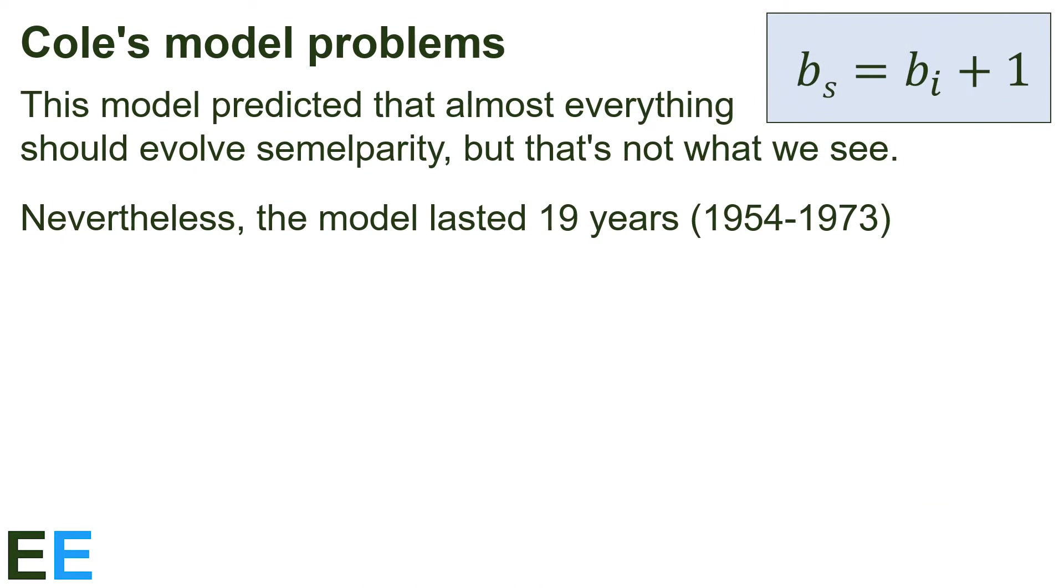Almost immediately, Cole's model ran into problems. This model predicted that almost everything should evolve semelparity. But that's obviously not what we see in nature. Nevertheless, the model lasted 19 years, from 1954 to 1973, because the math was correct and you can't argue with math. Well, you can, but only within the rules of math and Cole didn't really violate any of those.